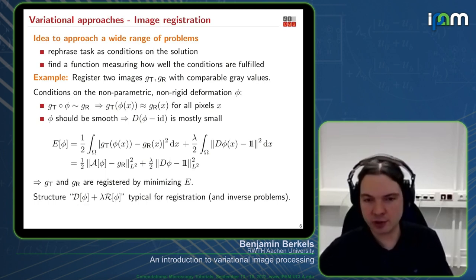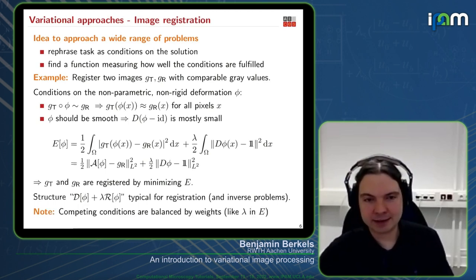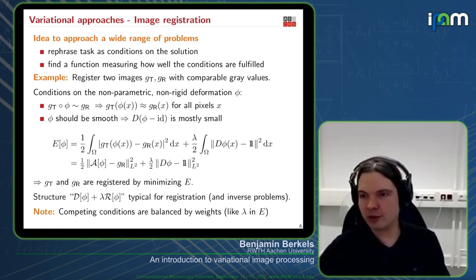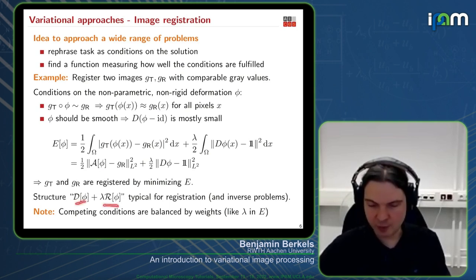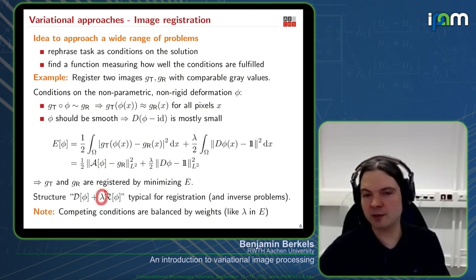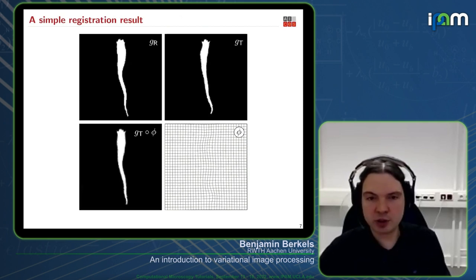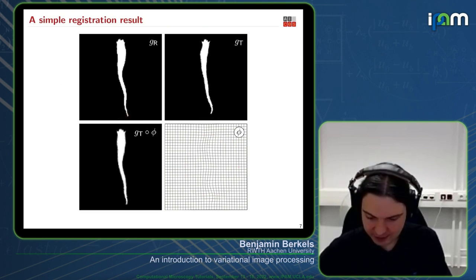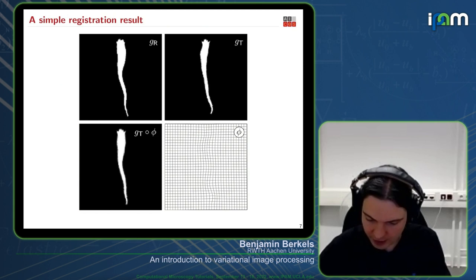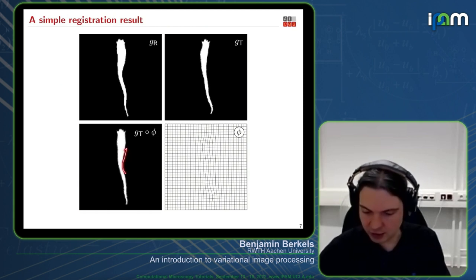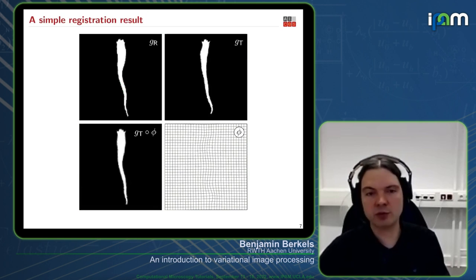This structure of data term plus regularizer is very typical, not only for registration but also for other tasks and inverse problems. An important drawback of the variational approach is that the different terms must be weighted, and you have to decide on the importance of each, balanced by a weight you set or estimate. Here is a simple example result: the two input images, the computed deformation, and the aligned image showing that the nonlinear deformation successfully approximates the bead structure.